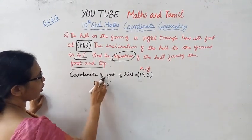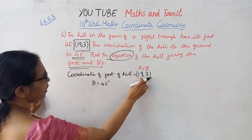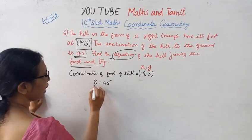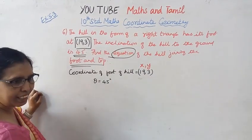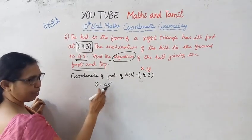Now coordinate of foot of the hill is (19,3). X1, Y1. Theta equal to 45 degree.